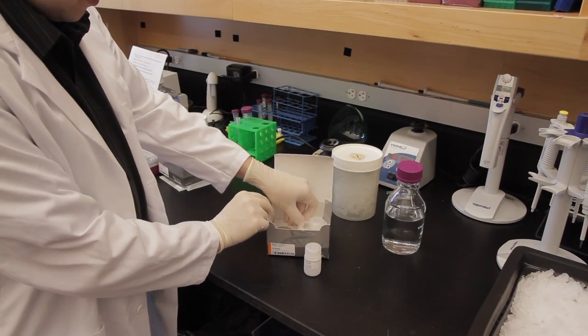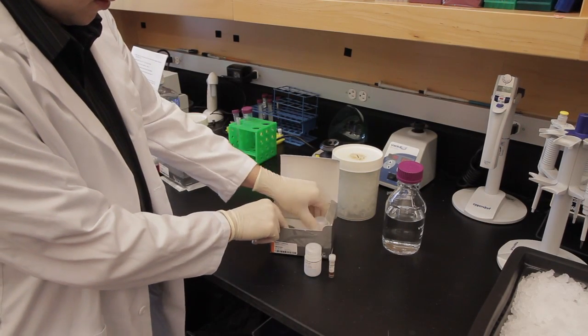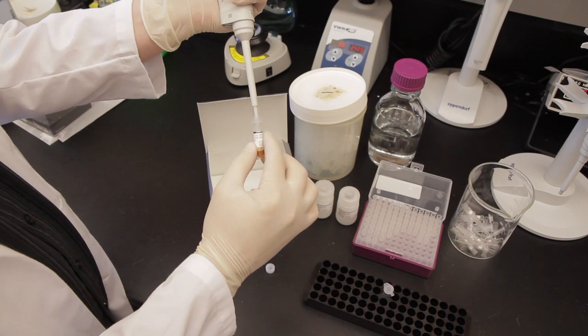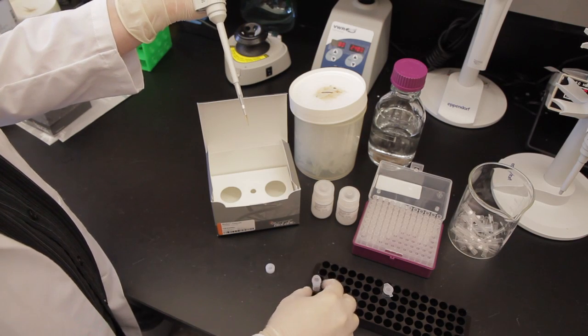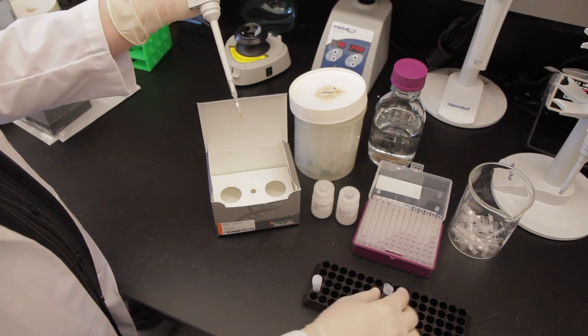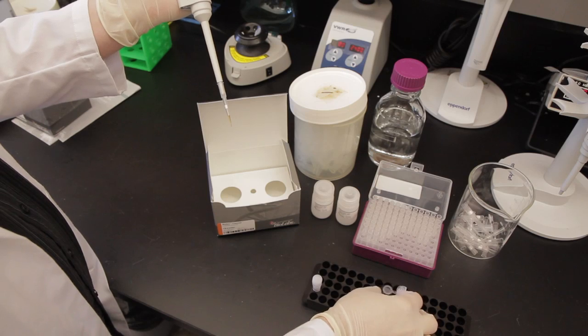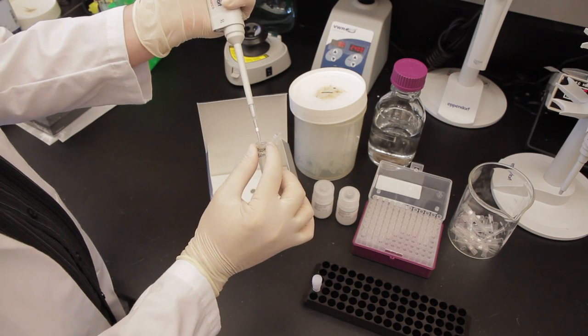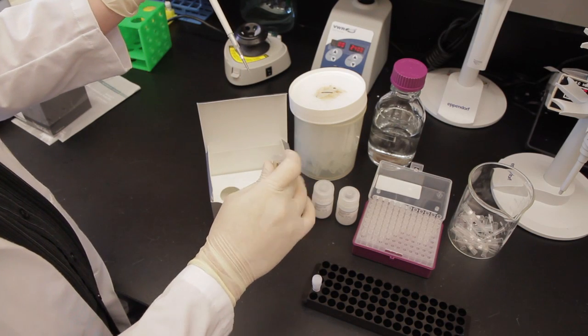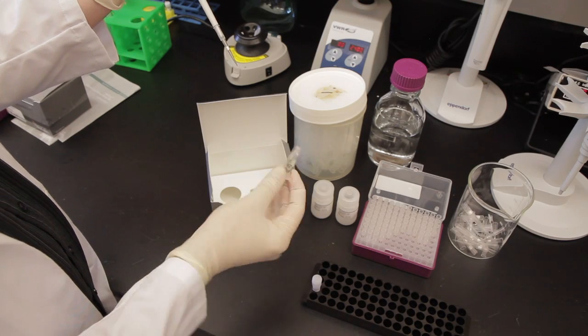Assay the supernatant using the BioLux Gaussia Luciferase Assay Kit. For the GLUC assay, prepare fresh assay solution by adding 15 microliters of BioLux GLUC substrate to 1.5 milliliters of BioLux GLUC assay buffer. Do not vortex the final mixture. Mix it by tube inversions.